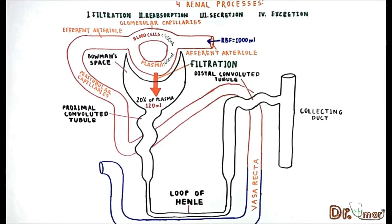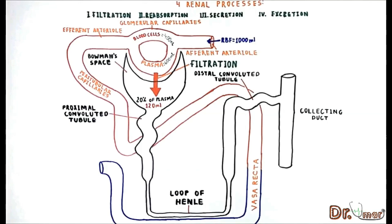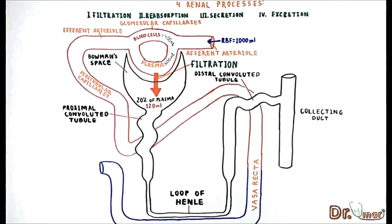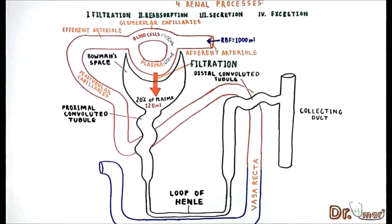Blood cells and proteins will not be filtered because they are very large. However, the size of albumin actually allows it to be filtered, but under normal conditions the glomerular membrane is negatively charged, which does not allow albumin to be filtered because albumin also carries a negative charge.